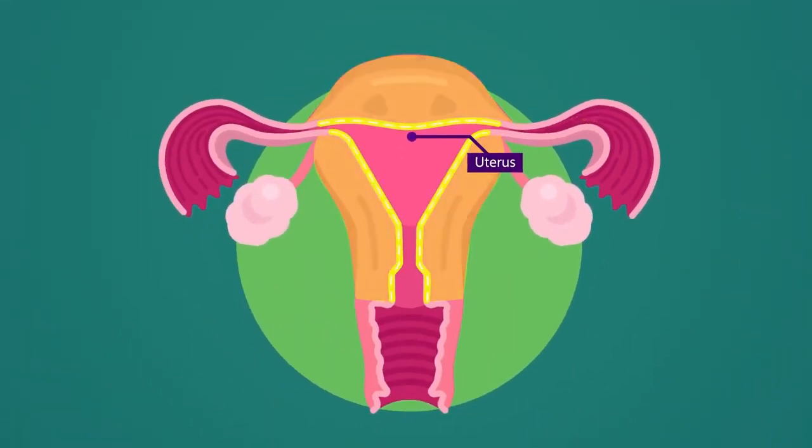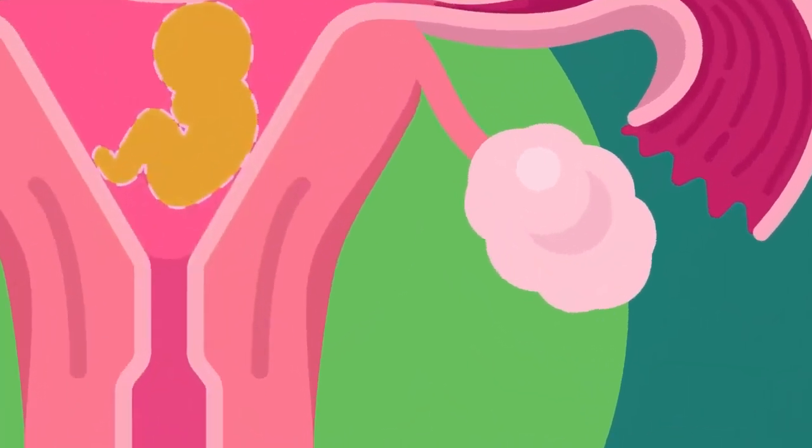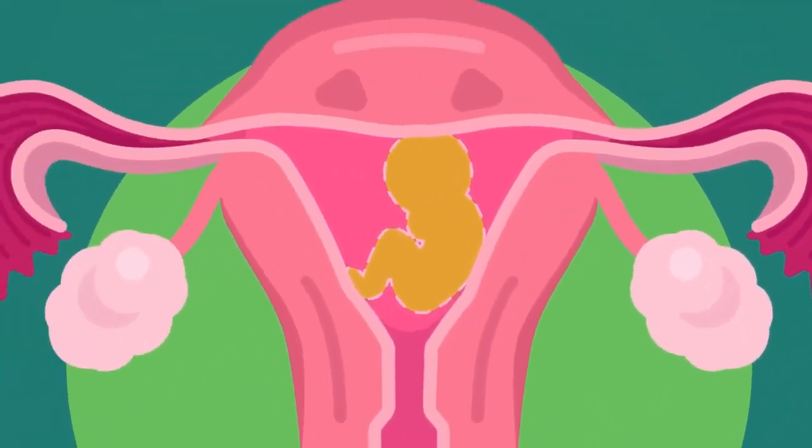The uterus is another name for the womb. It is where the baby or fetus develops during pregnancy. It is pear-shaped, about 7.5 centimeters long. The uterus has thick muscular walls which make it easier to stretch as the baby grows.